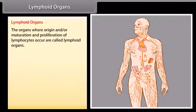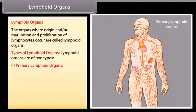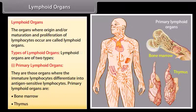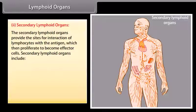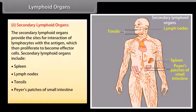The organs where origin, maturation, and proliferation of lymphocytes occur are called lymphoid organs. There are two types: primary lymphoid organs, where immature lymphocytes differentiate into antigen-sensitive lymphocytes — these include bone marrow and thymus; and secondary lymphoid organs, which provide sites for interaction of lymphocytes with antigens — these include spleen, lymph nodes, tonsils, Peyer's patches of small intestine, and appendix.